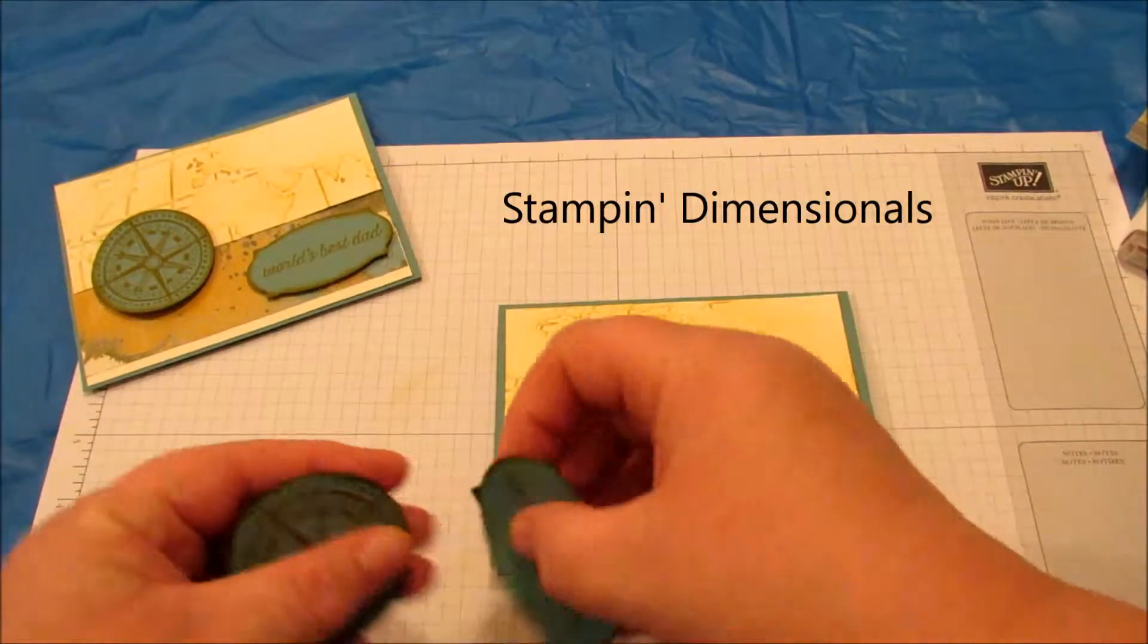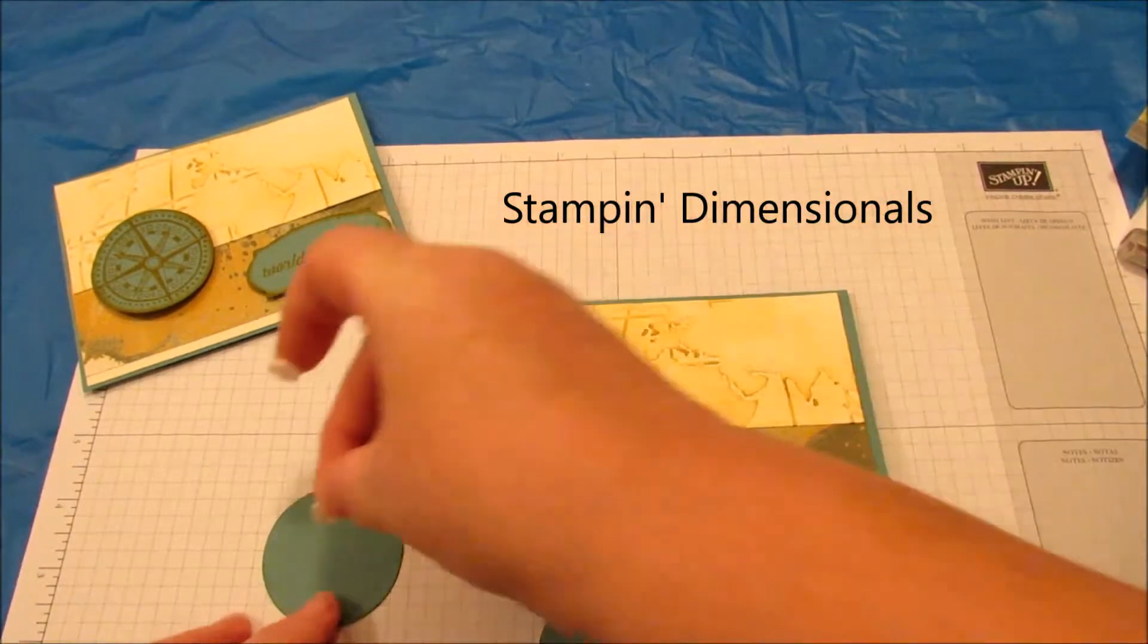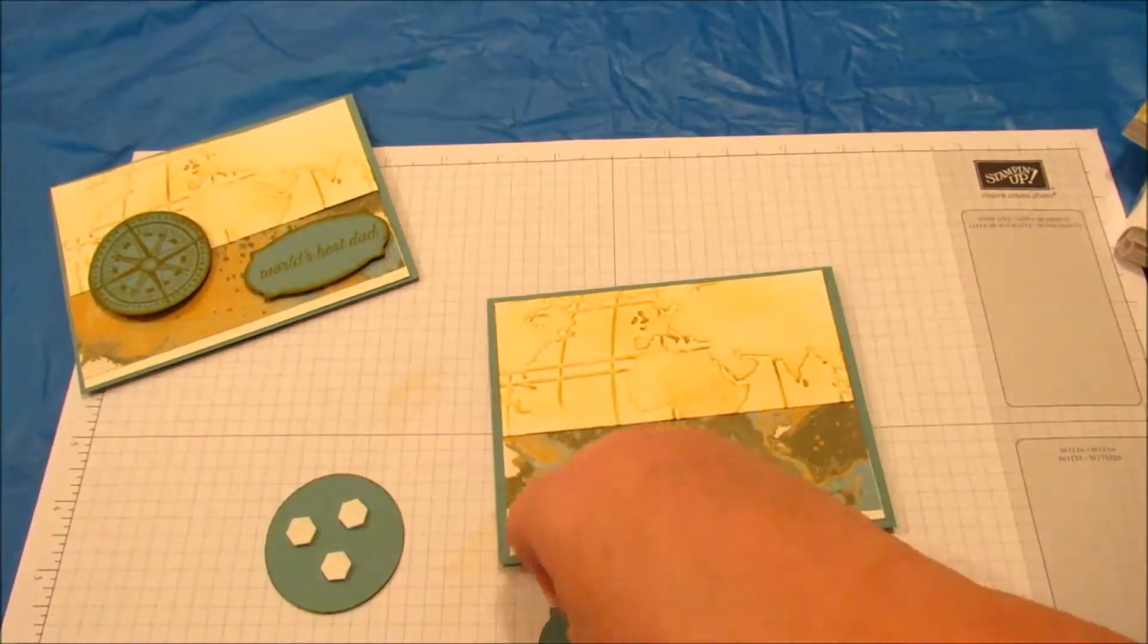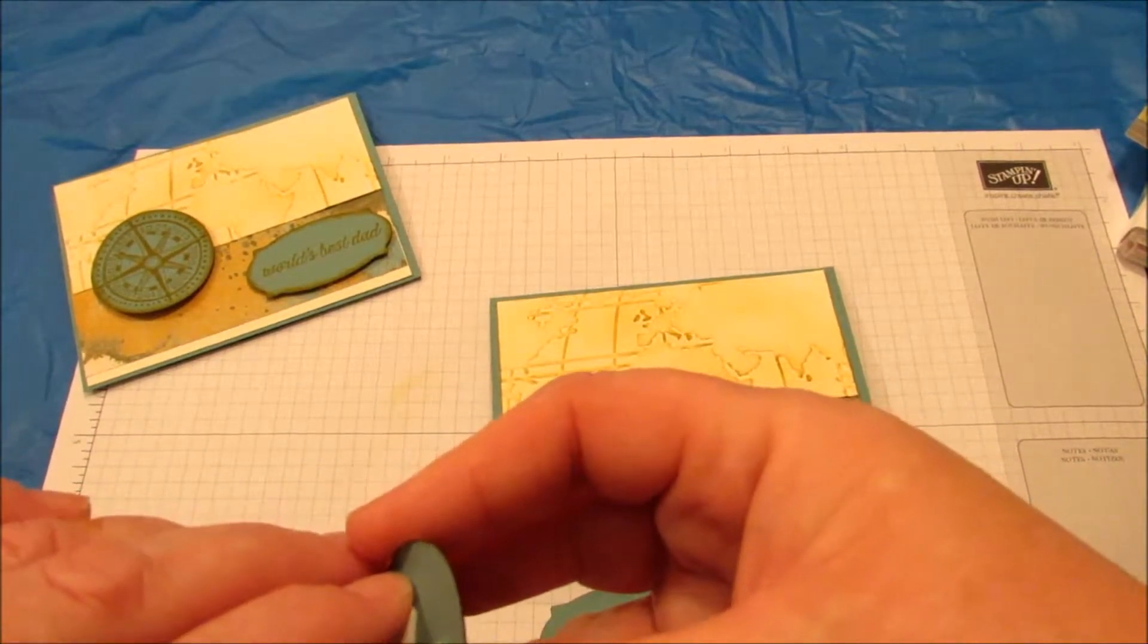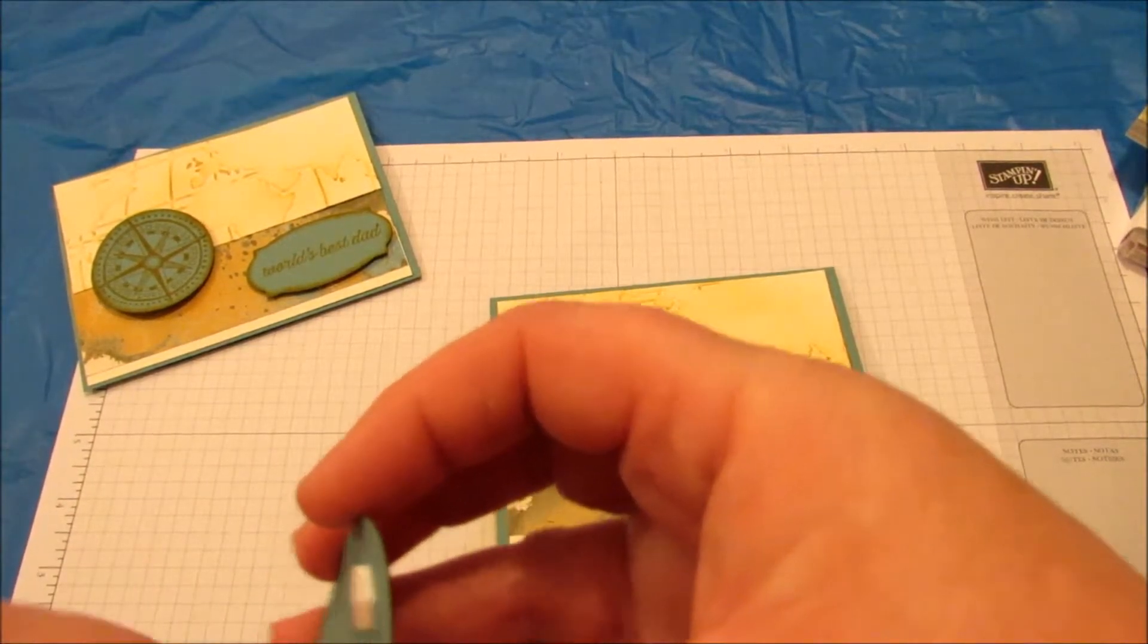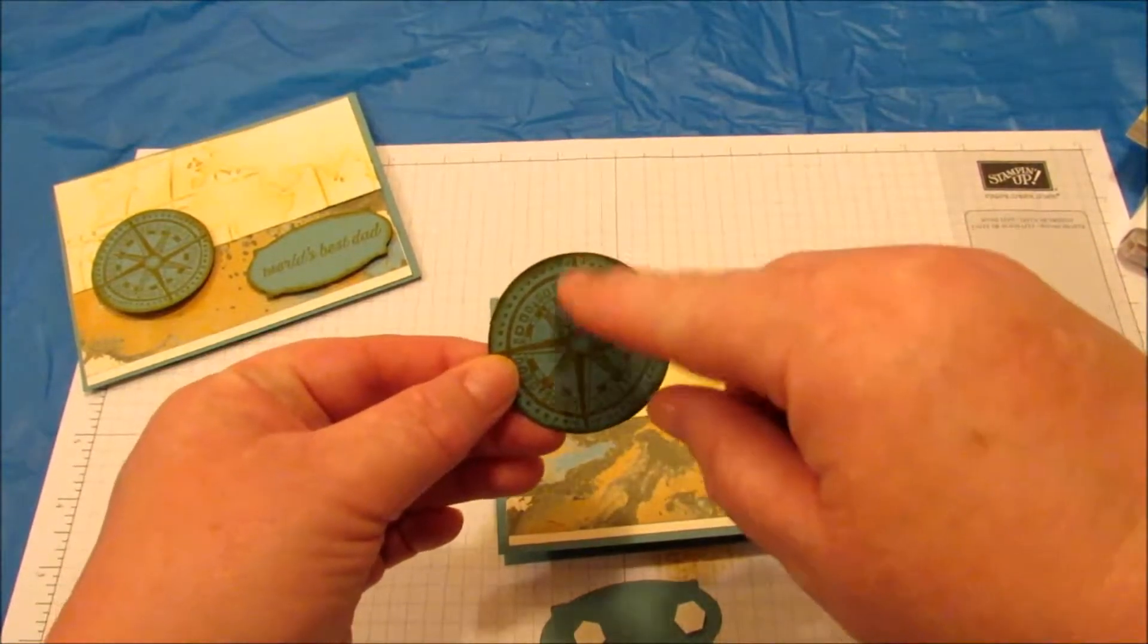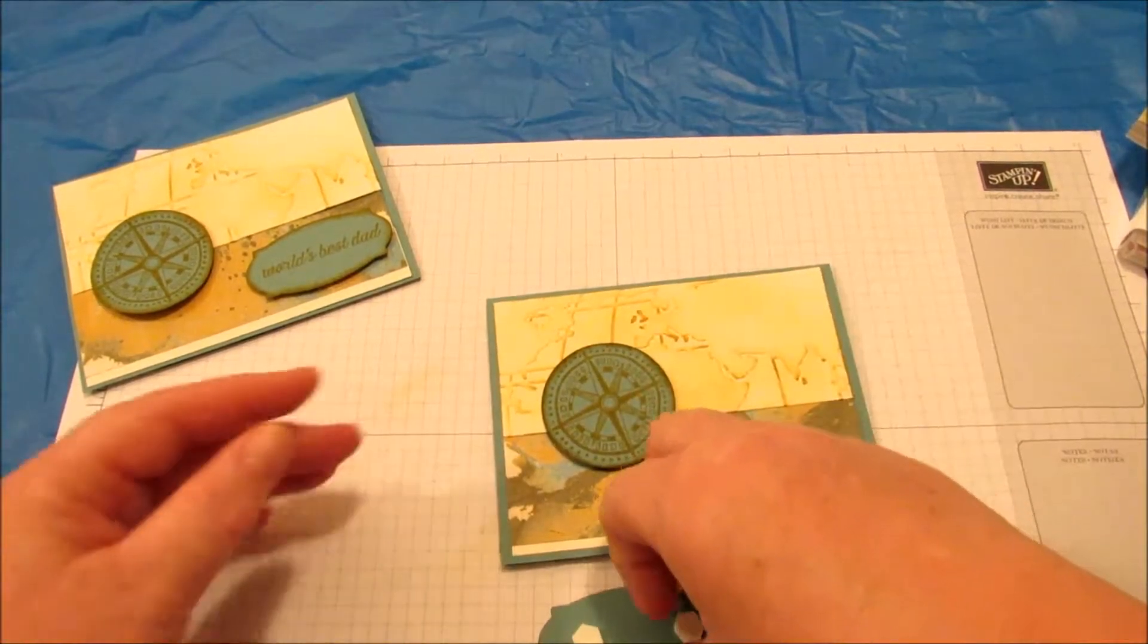Now I'm going to put dimensionals on the back of these. If you stick your finger in the center here, those come off pretty easy. Now, this is the top and bottom. I do want to go a little off center. I'm not so much into being perfect.